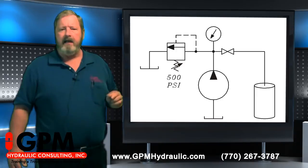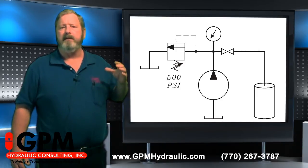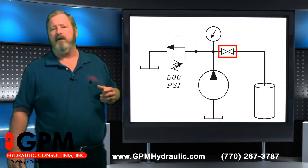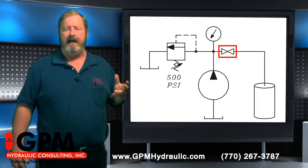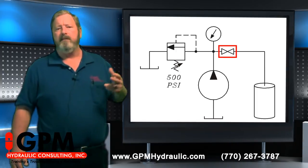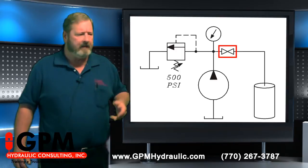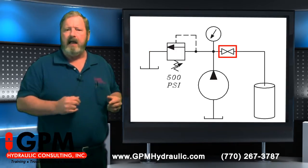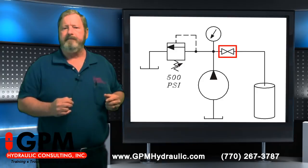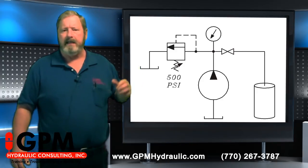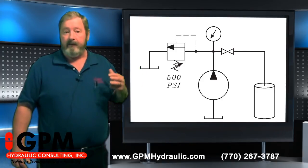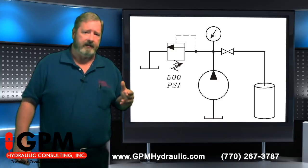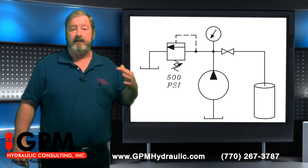Let's follow it in the other direction. We get to this component that looks kind of like a bow tie. This is a symbol for a manual valve — a hand valve, usually a ball valve or a gate valve. It's open because the symbol is not filled in. When the symbol is not filled in, that means it's open, and whenever the manual hand valve is open, it adds no resistance to the system — it's as though it's not there.